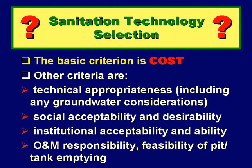Other criteria are technical appropriateness. This is obviously important. For example, shallow unpickable rock would limit our choice, and we would also consider any groundwater considerations — does it need to be protected? Social acceptability and desirability are clearly important too. We wouldn't want to design a system that the intended users wouldn't accept or indeed want.